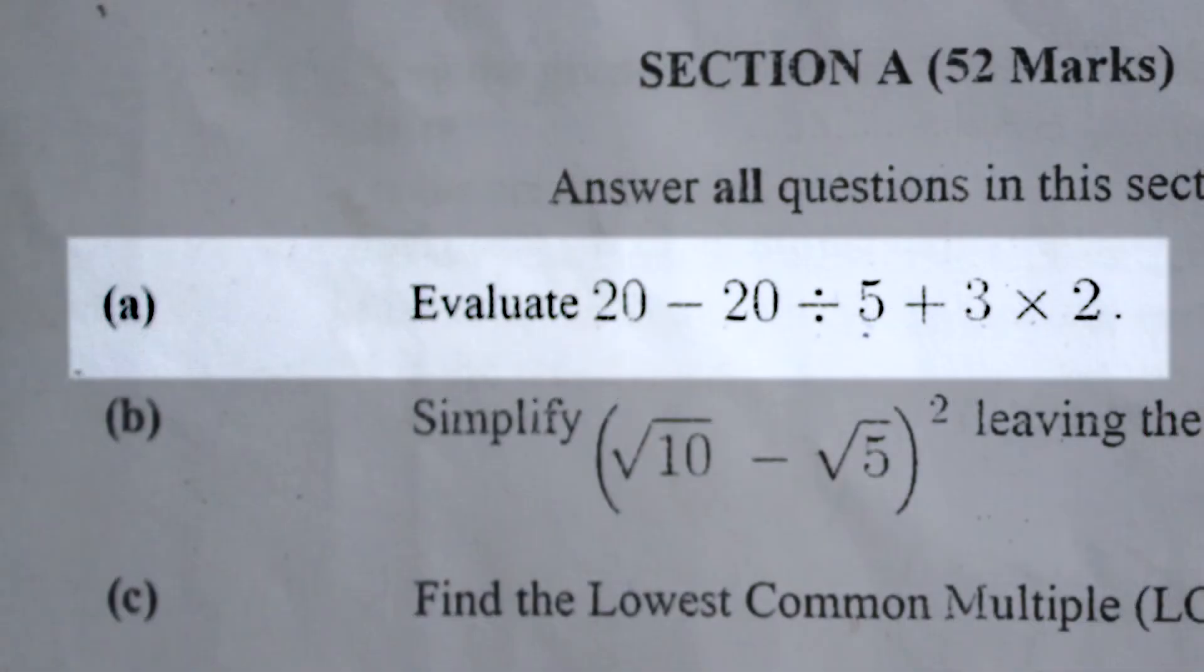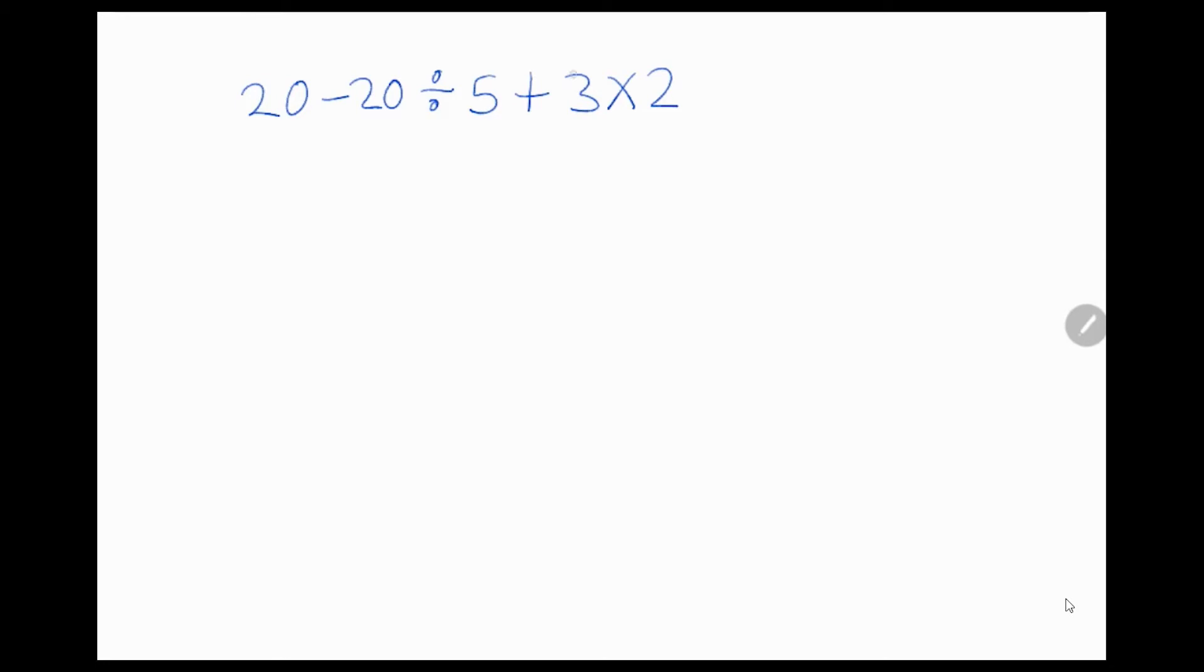Question number 1A. Evaluate 20 minus 20 divided by 5 plus 3 times 2. This question tests the understanding of BODMAS. We know multiplication and division happens first before addition and subtraction. In order to make this clear, we are going to put brackets around the division and multiplication terms.